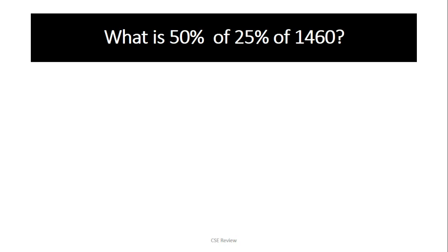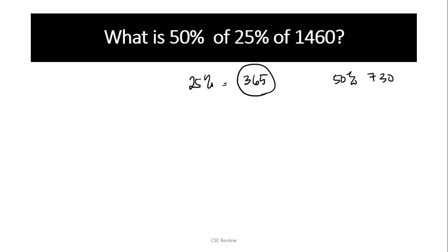Next: what is 50% of 25% of 1460? What I usually do is start with the percentage closest to the large number. So 25% of 1460: 50% is 730 as we discussed, and half of 730 for 25% is 365. Now we need 50% of that 365. Multiply by 50% or halve it — that gives you 182.5. That is the answer. Some of you were confused a little, but I know you'll get used to it.